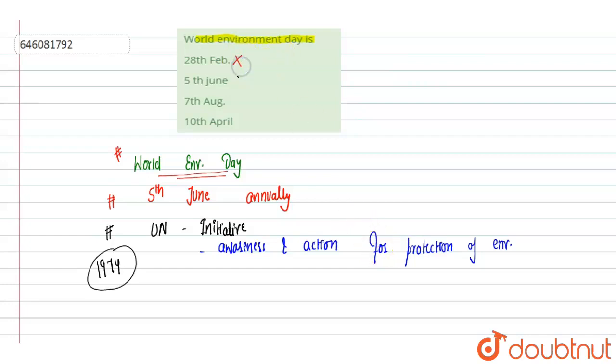Options are: 28th February, incorrect. 5th of June, yes, this is correct. This is annually celebrated on 5th of June. 7th of August, incorrect. 10th of April, incorrect. Option B is correct. Hope you get it, thank you.